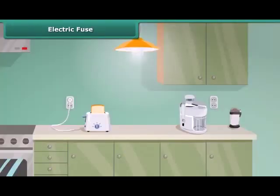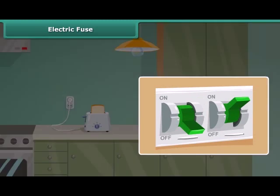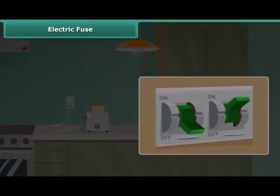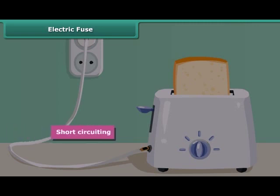Sometimes you may have seen the situation in your house where the fuse is blown off and the electric supply is cut off. Can you tell the reason for this? This is because of the enormous amount of heat produced wherever there is an excess flow of current due to short circuiting, overloading, or insulation failures of appliances.